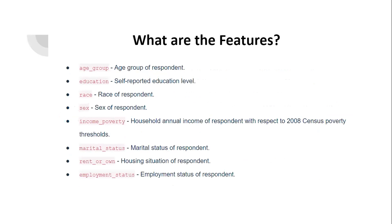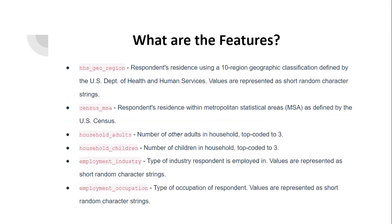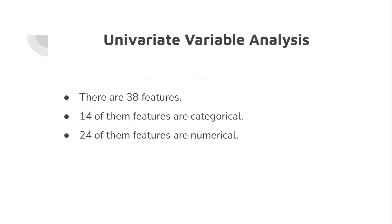14 of these 38 features have categorical values and 24 of 38 have a numeric value.